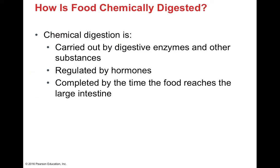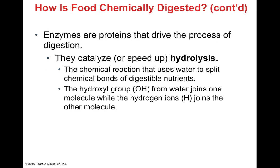Chemical digestion occurs by digestive enzymes, which are very specific for the reaction they mediate — one enzyme per reaction. The regulation of enzyme concentration is controlled by hormones. Almost all chemical digestion occurs in the small intestines and is generally completed by the time food reaches the large intestines. Enzymes are proteins that speed up, or catalyze, particular reactions. Some catalyze hydrolysis — taking a water molecule and splitting it to produce a hydroxyl group and a hydrogen ion to break apart molecular bonds.